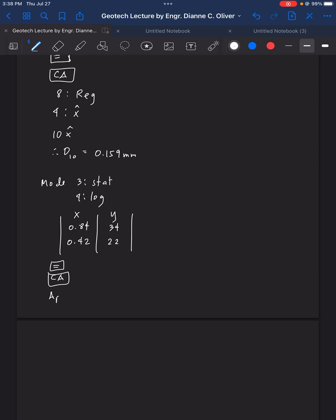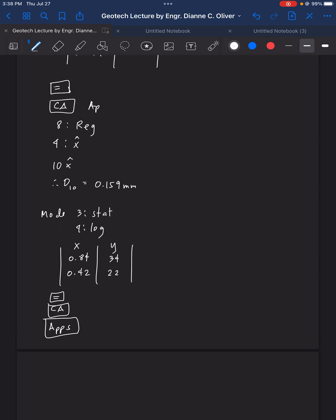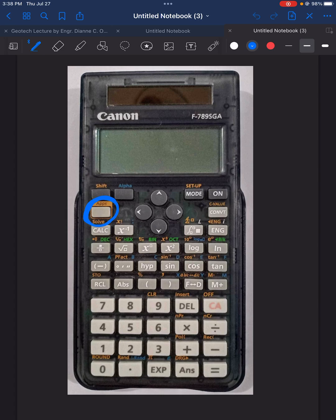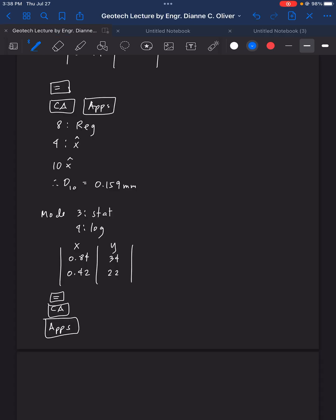After you click that equal sign, you have here, C, A. And then, go again on apps. You click here, apps. Again, where's the apps? Here, that's the apps. Click there, number 8, reg. Then, number 4, the X. And then, input in your calculator, 30 bar X. And equal.